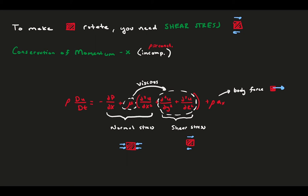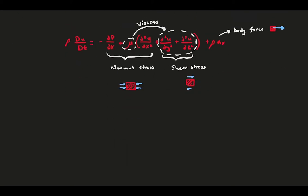Naturally, if we assume the flow is inviscid, we neglect these terms because viscosity goes to zero. That means all the shear stress terms go away. So, we have nothing that can cause rotation.